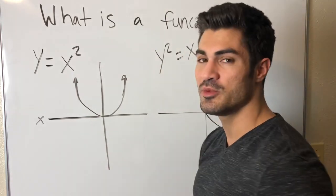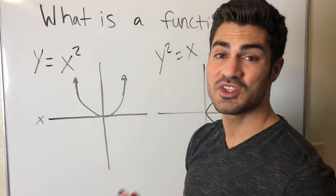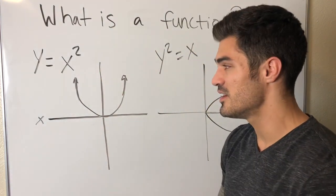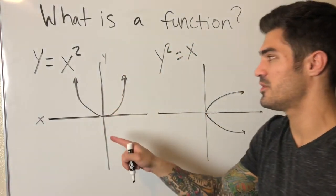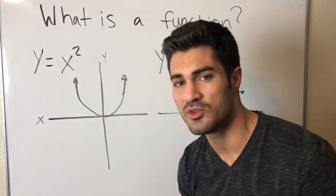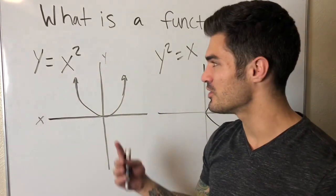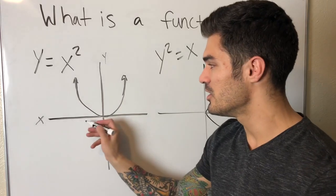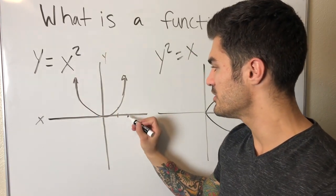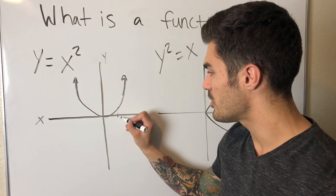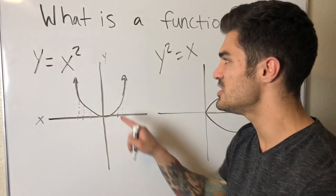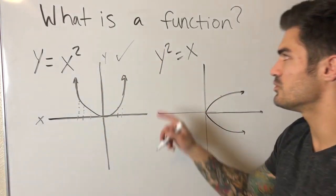Sometimes you'll be given a graph and asked if the equation is a function. Look at y = x² and y² = x. For y = x², the x-values are our inputs. If I go to x = 2, I get out 4; x = 5 gives 25. No matter where I go on the x-axis, it lines up with exactly one y-value. This is a function.